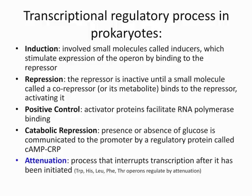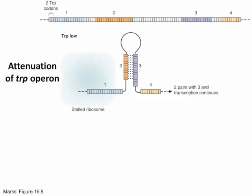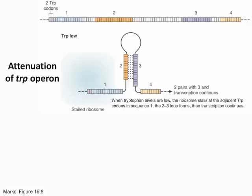The last transcriptional regulatory process is attenuation — a process that interrupts transcription after it has already begun. Know that the tryptophan, histidine, leucine, phenylalanine, and threonine operons are all regulated by attenuation. Definitely know those amino acids are affected by attenuation.